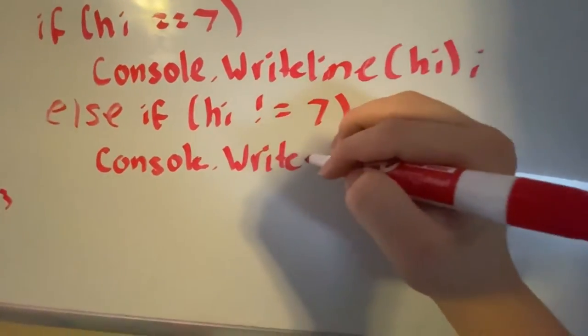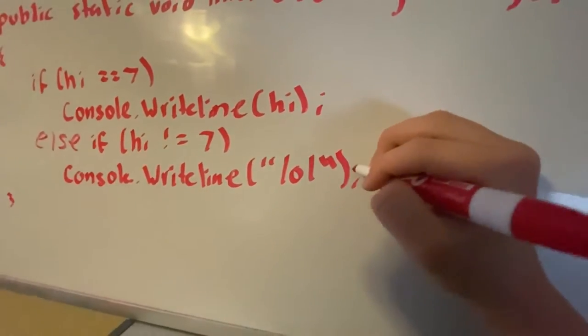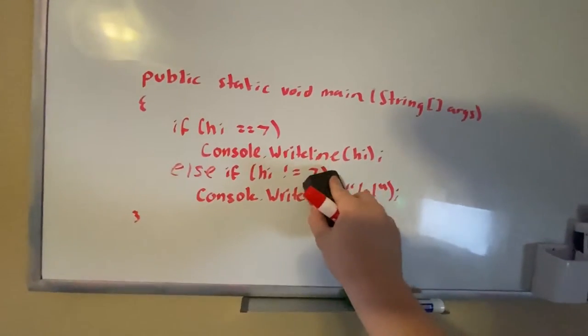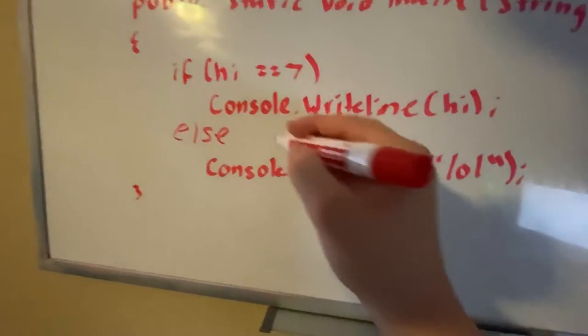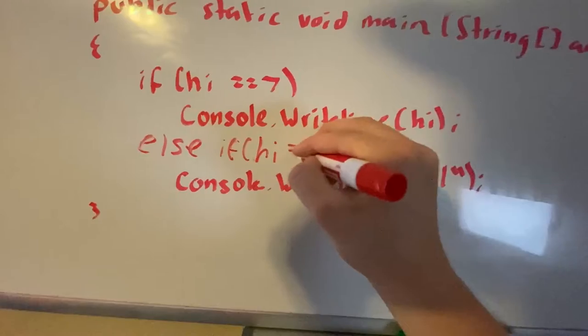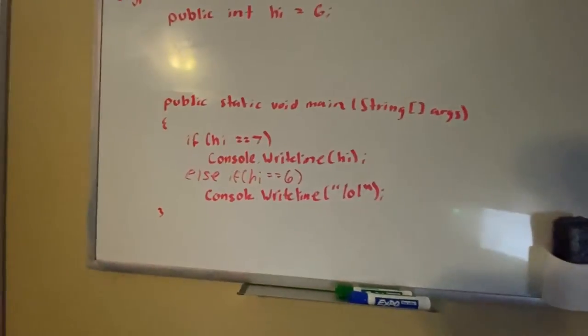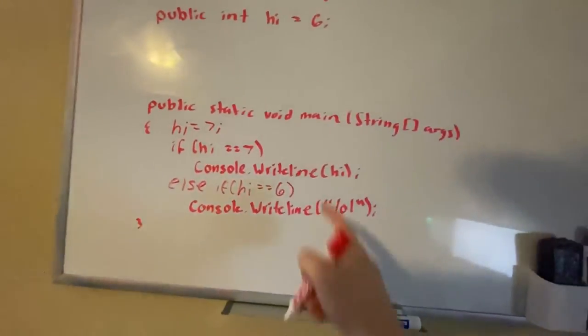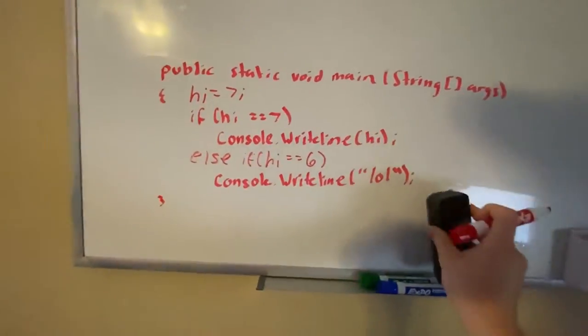We could do console dot WriteLine, for example. But in your IDE it's probably going to tell you this is redundant because this is the exact same thing as having an else. However, if you want to check for something else, you can do else if hi is equal to 6. Since it's 6, it will print this as long as you don't change it. If you set hi equal to 7 beforehand, then it's going to run this and ignore all of this.